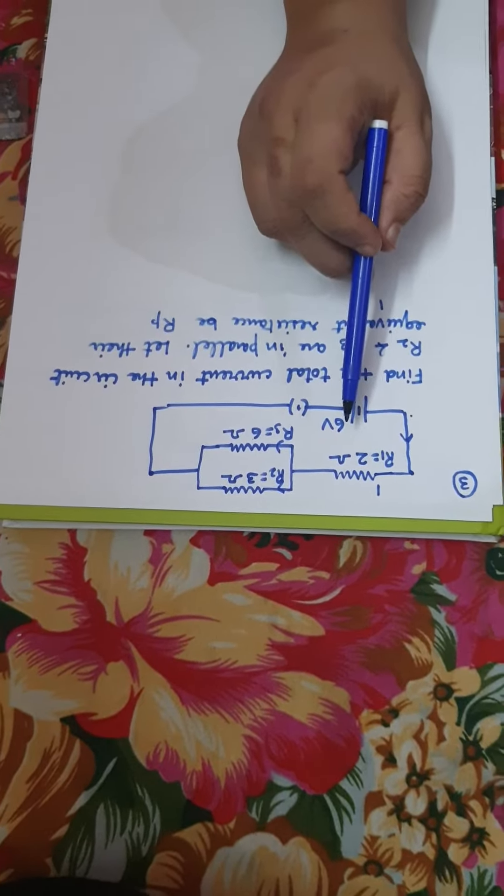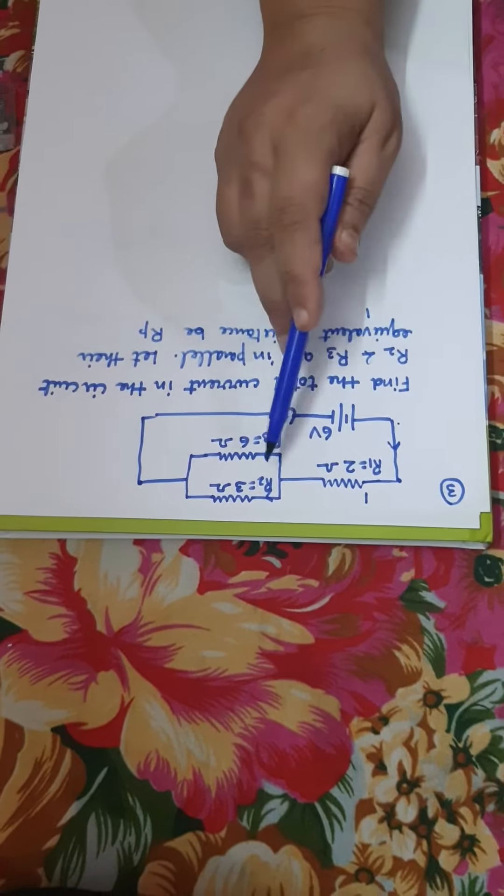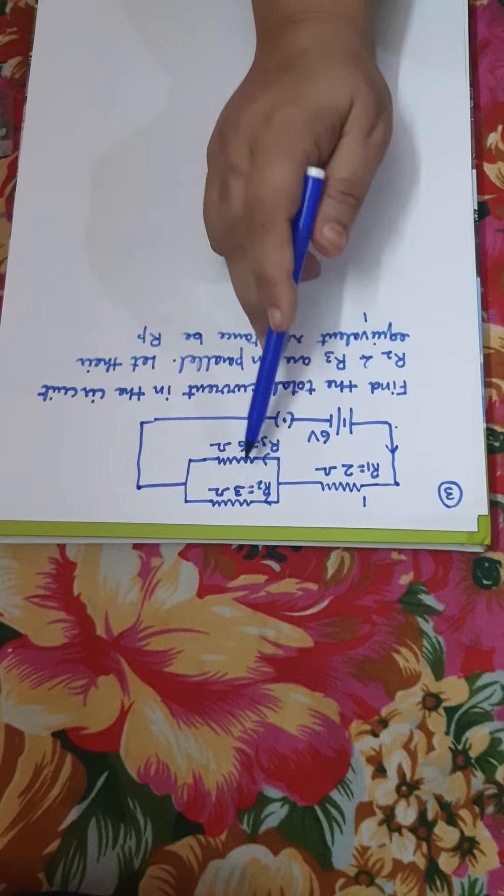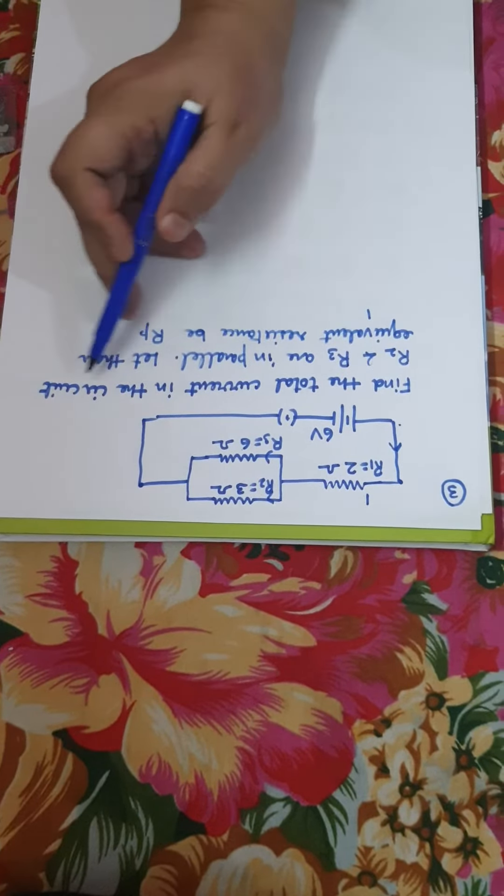So this is the third numerical and here we have given the circuit. Three resistors are there and we have to find the total current in the circuit.